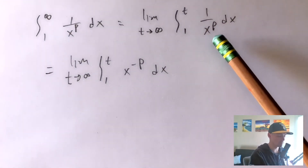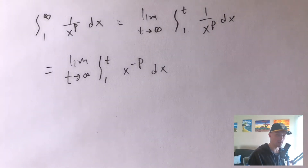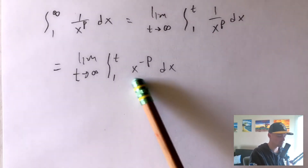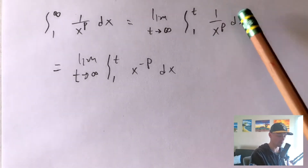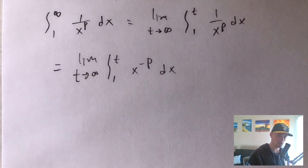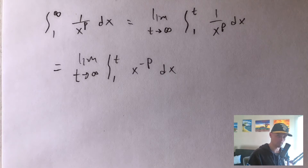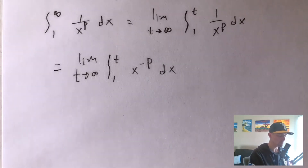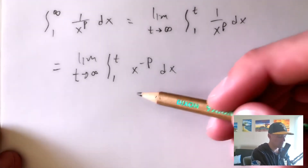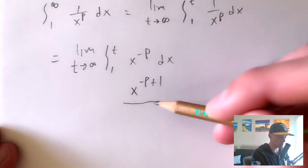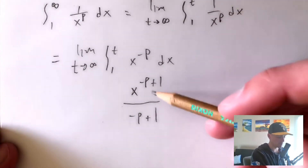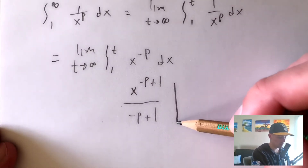You can move something from a denominator to a numerator by making the power negative, so these two forms are exactly the same. Now we can integrate using the power rule — as long as p is not 1. If p is 1, we just have the integral of 1 over x, whose antiderivative is ln of x. But assuming p is not 1, the power rule gives us x to the negative p plus 1, divided by negative p plus 1. That's the antiderivative, and we evaluate it from 1 to t.